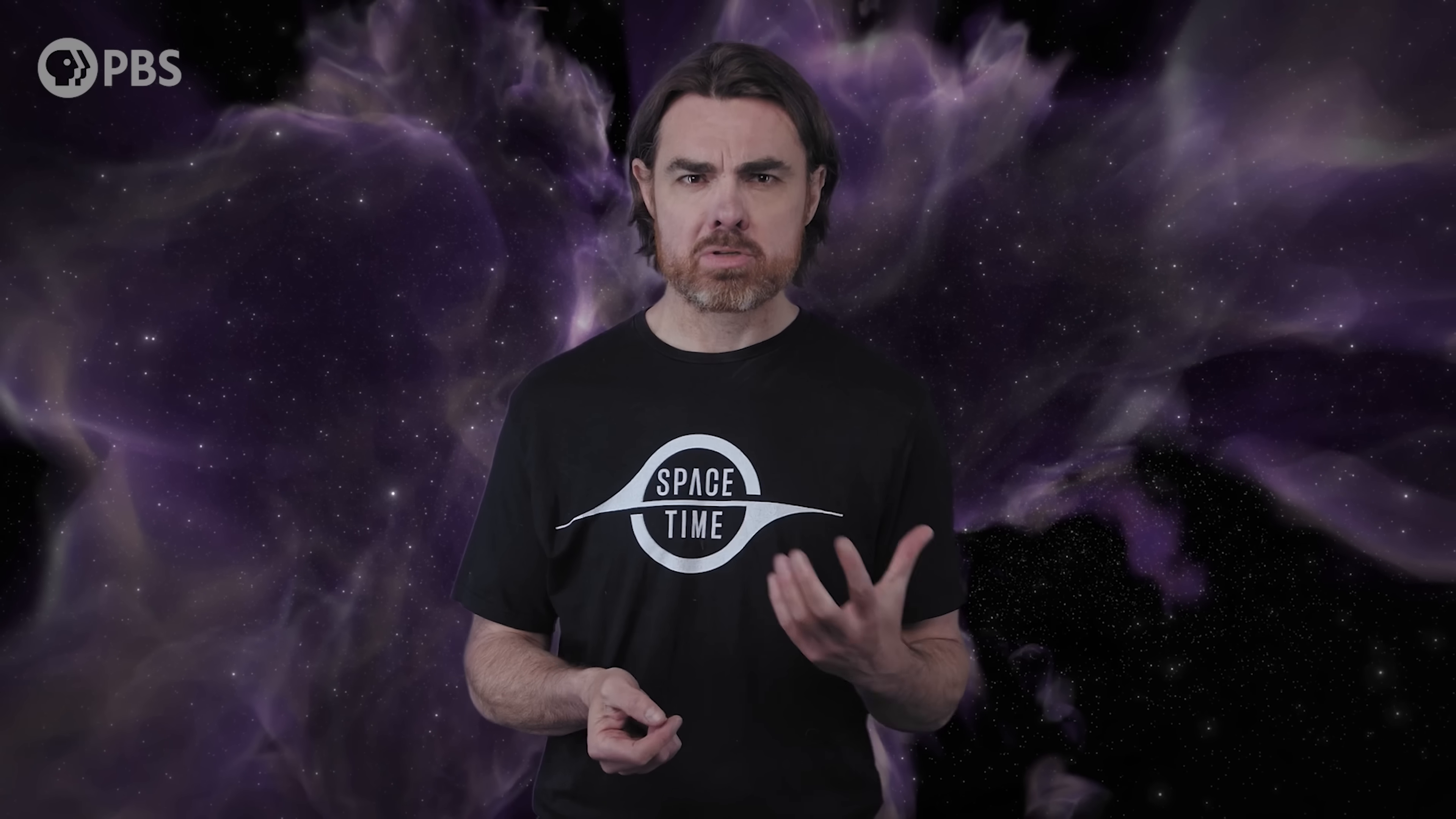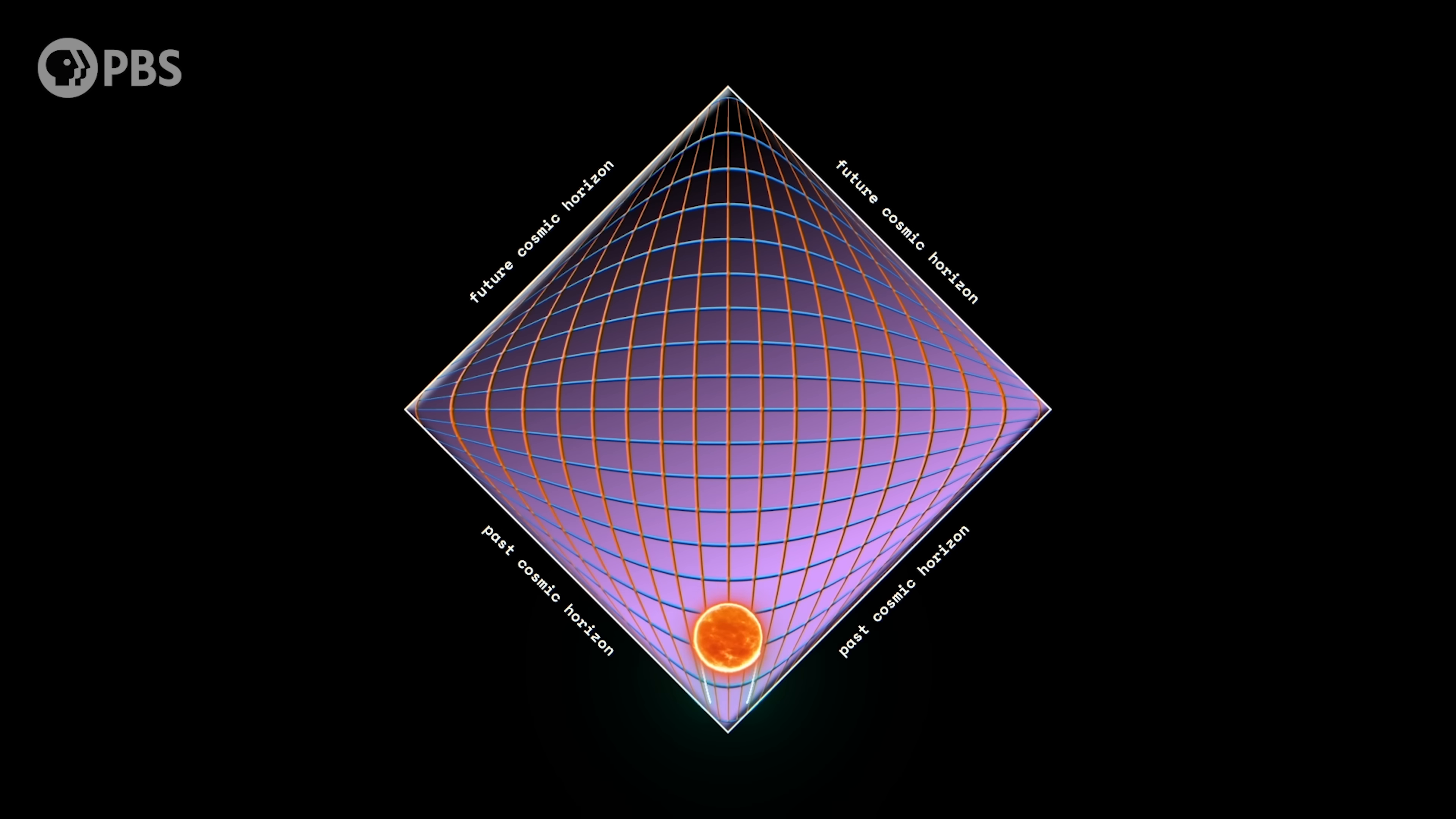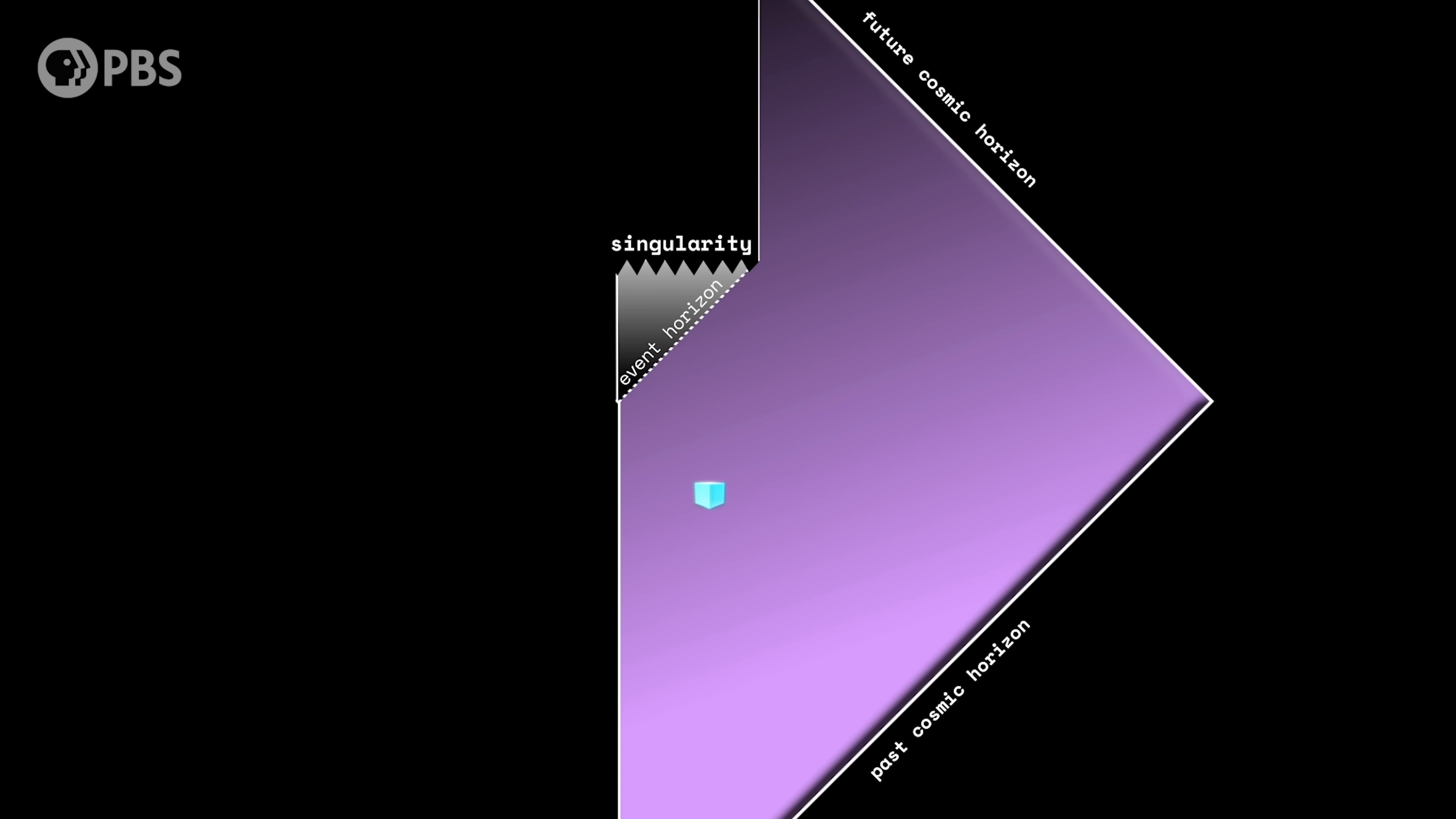The diagram we've been using is for a black hole that's always been there and always will be. Real black holes typically form from collapsed stars, and they also leak Hawking radiation until they disappear. Here's how we might depict such a black hole. We have a Penrose diagram for the universe where the black hole forms somewhere in space when a collapsing star forms an event horizon, then it evaporates by Hawking radiation.